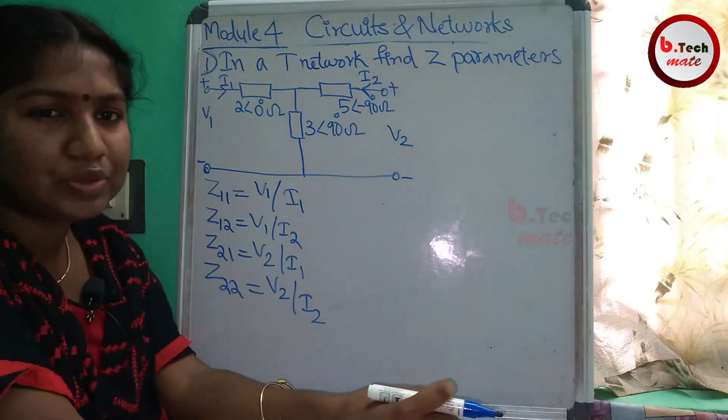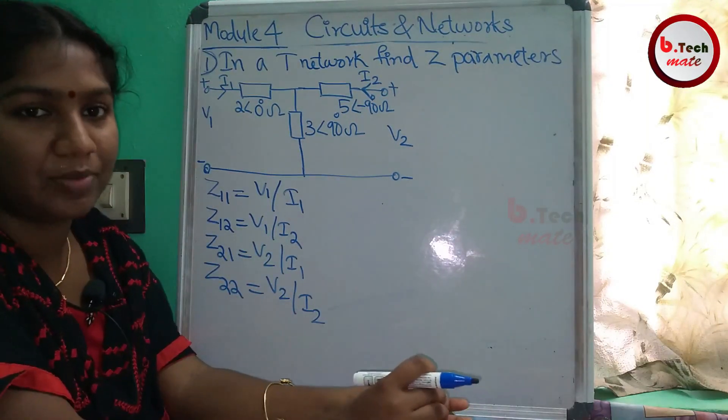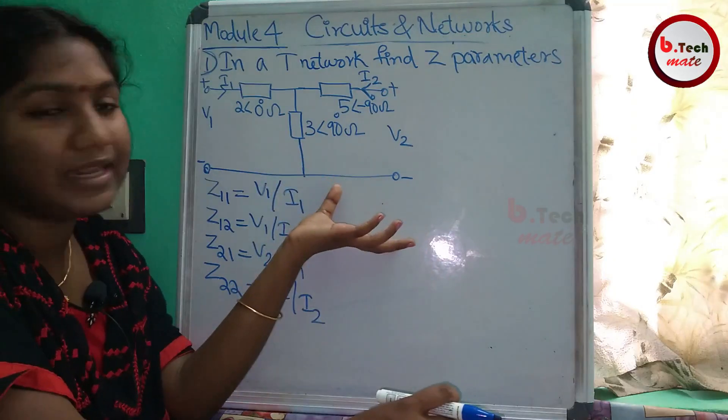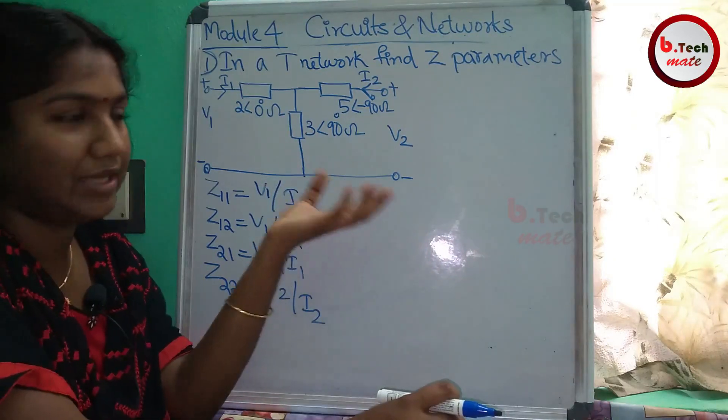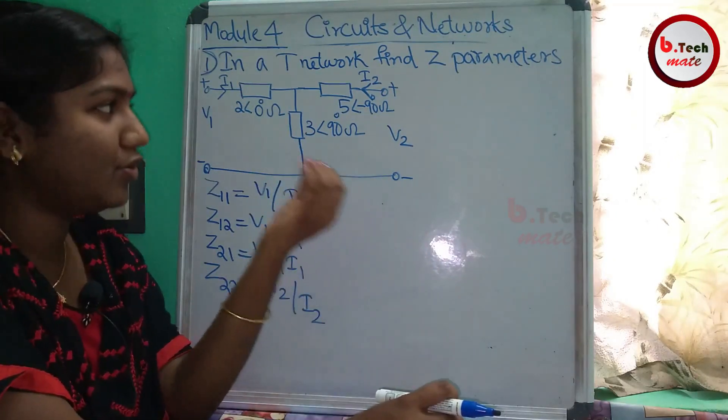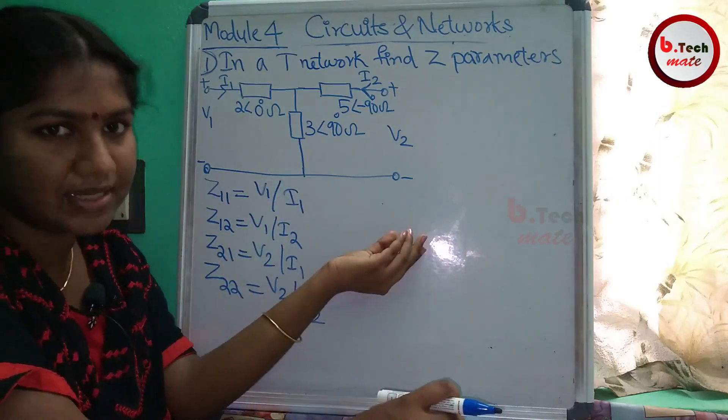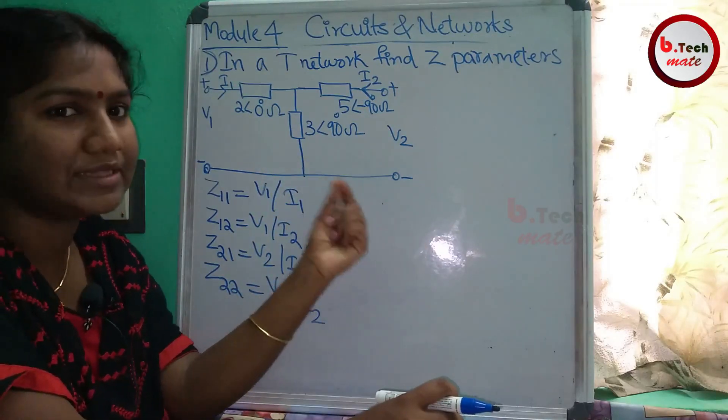Now if we use these equations, we have a problem. We need to be able to find the T-Network specialty. Then the Z-parameters - I will be able to find a T-Network Z-parameters using this method.